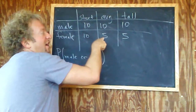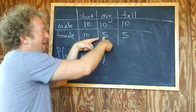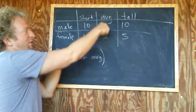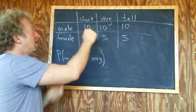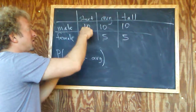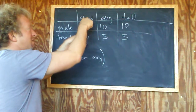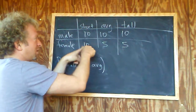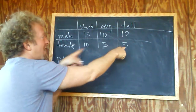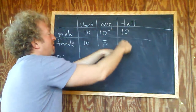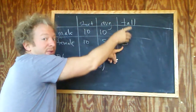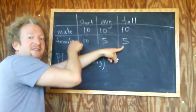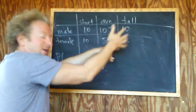So what is this 5? Well, these are the females that are average height. Likewise, there are 10 males that are short, 10 females that are short, and 5 tall females. There are 15 tall people total — 10 of them are males, 5 of them are females.